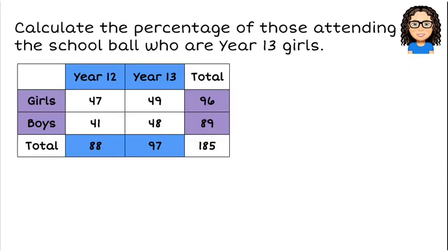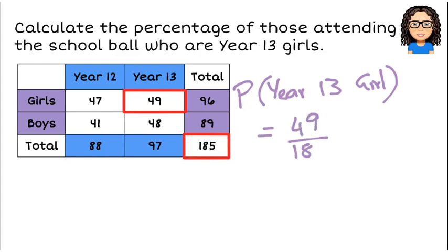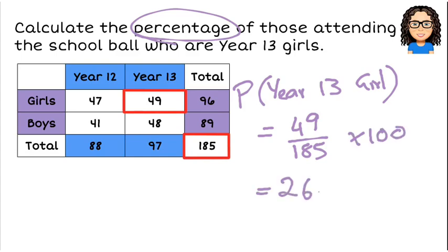Our next step is to calculate the percentage of those attending the ball — that's from everyone attending — who are Year 13 girls. So I want to know the probability of randomly choosing a Year 13 girl. I've got 49 Year 13 girls, and there are 185 students in total that went to the ball. So the probability is 49 out of 185. The question asks for that as a percentage, so I multiply by 100, which gives me 26.5%.